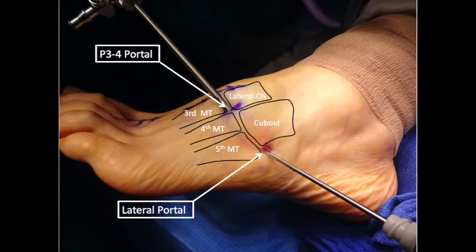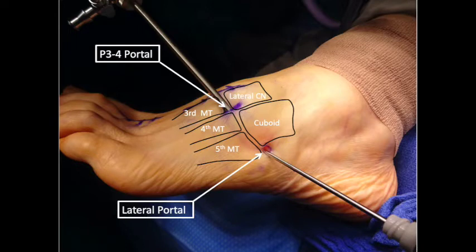There are two portals used to access the 4th and 5th tarsometatarsal joints. The P3-4 portal stands for the portal between the 3rd and 4th tarsometatarsal joint, and the lateral portal, which is lateral to the 5th tarsometatarsal joint. A 30-degree 2.7mm arthroscope is placed into the P3-4 portal, and a 2.5mm aggressive soft tissue shaver is placed into the lateral portal.